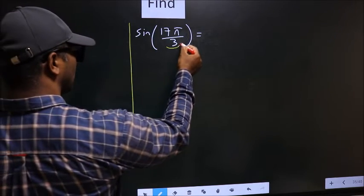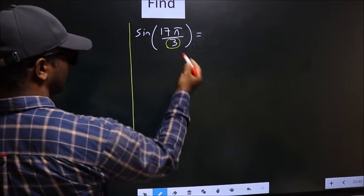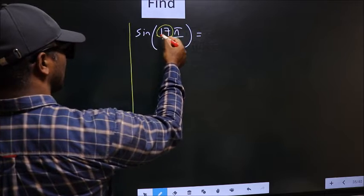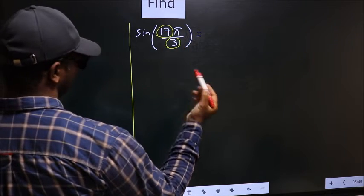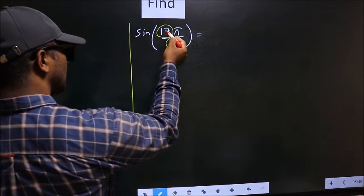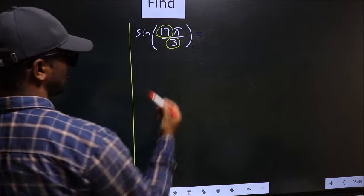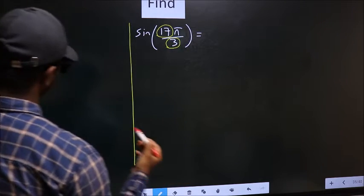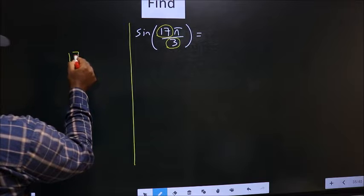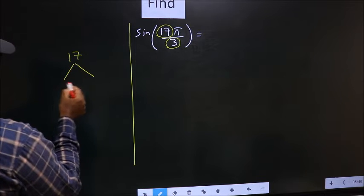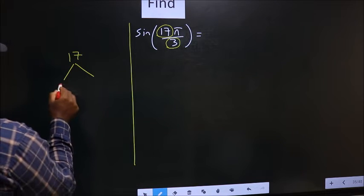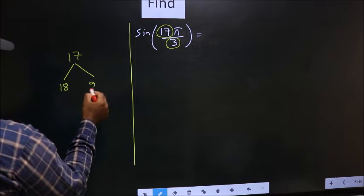In the denominator, we have 3. In the numerator, we have 17. Now you should look, 17 is close to which multiple of 3? What I mean is, 17 and here you write multiples of 3, 18 and 21.